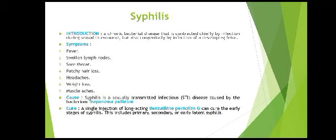Syphilis is a chronic bacterial disease that is contracted primarily by infection during sexual intercourse, but can also be transmitted to a developing fetus. Symptoms include fever, swollen lymph nodes, sore throat, patchy hair loss, headache, and muscle aches. Syphilis is a sexually transmitted infection caused by the bacterium Treponema pallidum. A single injection of long-acting benzathine penicillin can cure the early stages of syphilis, including primary, secondary, and early latent syphilis.